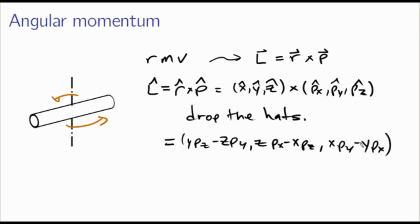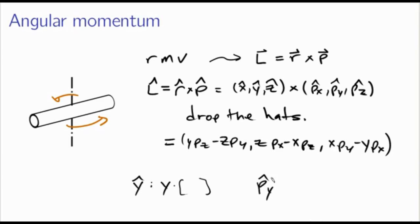These are all operators of the familiar kind. y-hat acting on a function is just y the coordinate times that function. Likewise, py-hat is minus i·ħ times the partial derivative with respect to y of whatever the operator is acting on. So these are the usual operators — we're just combining them in a new way in three dimensions.